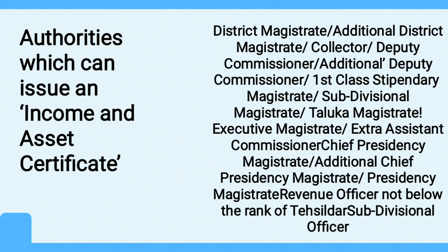The certificate looks somewhat like what is shown on screen. There are certain authorities which can only issue the Income and Asset Certificates: District Magistrate, Additional District Magistrate, Collector, Deputy Commissioner, Additional Deputy Commissioner, First Class Stipendiary Magistrate, Sub-Divisional Magistrate, Taluka Magistrate, Executive Magistrate, Extra Assistant Commissioner, Chief Presidency Magistrate, Additional Chief Presidency Magistrate, Presidential Magistrate, Revenue Officer not below the rank of Tehsildar, and Sub-Division Officer for the area where the candidate or his family normally resides.